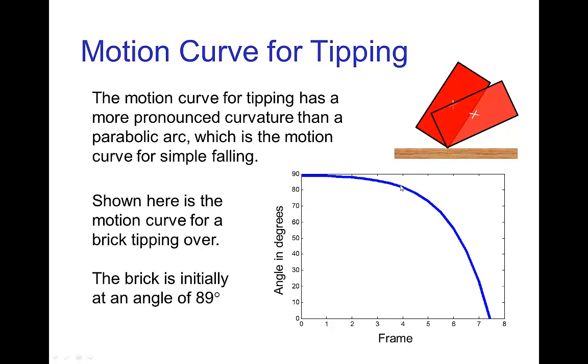Then in the remaining time, it turns rather quickly the remaining eighty degrees. We see here that this motion curve for tipping has a much more pronounced curvature than the motion curve that would be a parabolic arc. If you remember the parabolic arc is the motion curve that we get when an object is simply falling, we have much more texture in the timing and spacing for something tipping over.